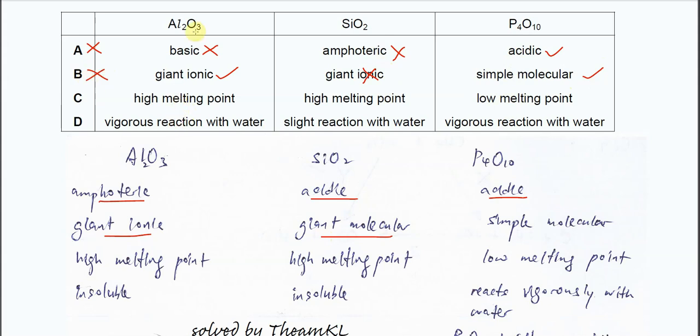Okay C. Aluminium oxide, because it's a giant ionic, has a high melting point. Yes. Silicon dioxide, because it has giant molecules, has a high melting point.